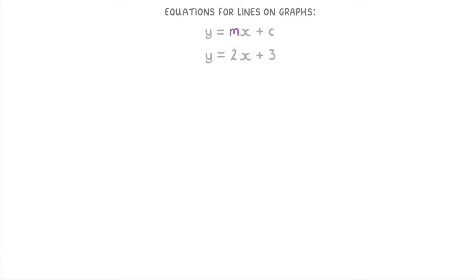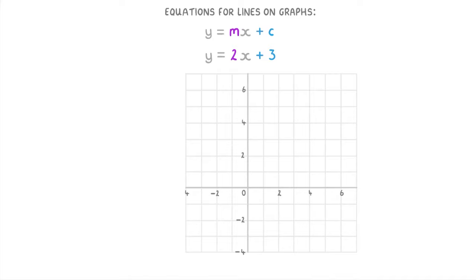For example, if we took this equation, y equals 2x plus 3, then m would be 2, because that's the number in front of the x, and c would be positive 3.